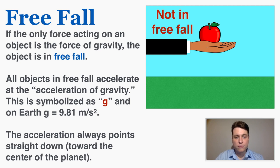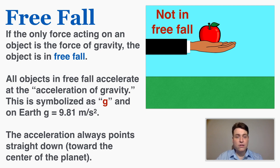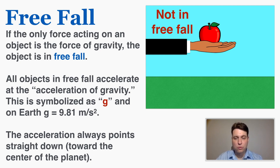All objects in freefall accelerate at the acceleration of gravity, symbolized as lowercase g. On Earth, g is always 9.81 meters per second squared for any object we're dealing with. The mass of the object does not matter — all that matters is that the object is on or near planet Earth. The acceleration always points straight down toward the center of the planet.